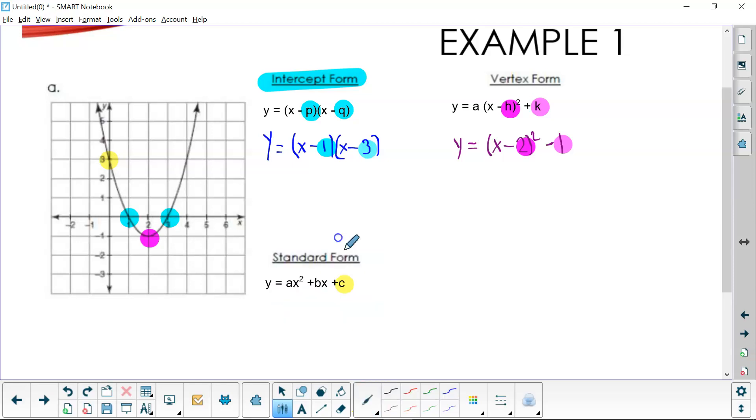But how do we get our standard form? I think the easiest way to get the standard form is to take the factored form and just multiply these factors together. So, let's take it right here, (x - 1)(x - 3).